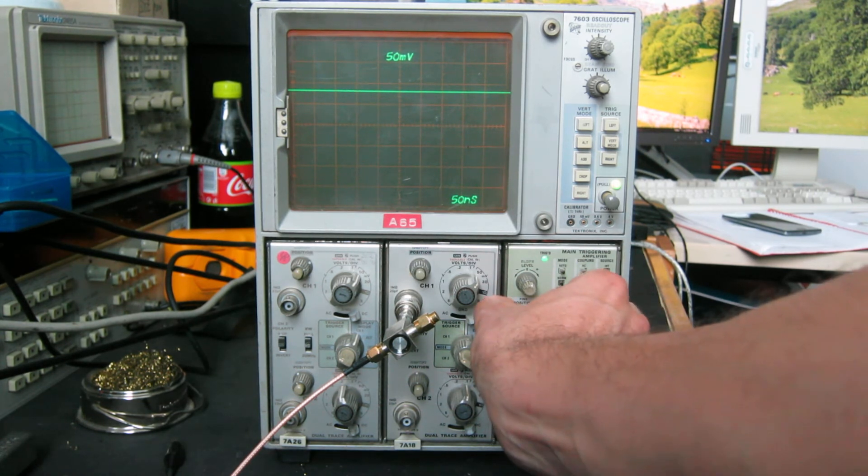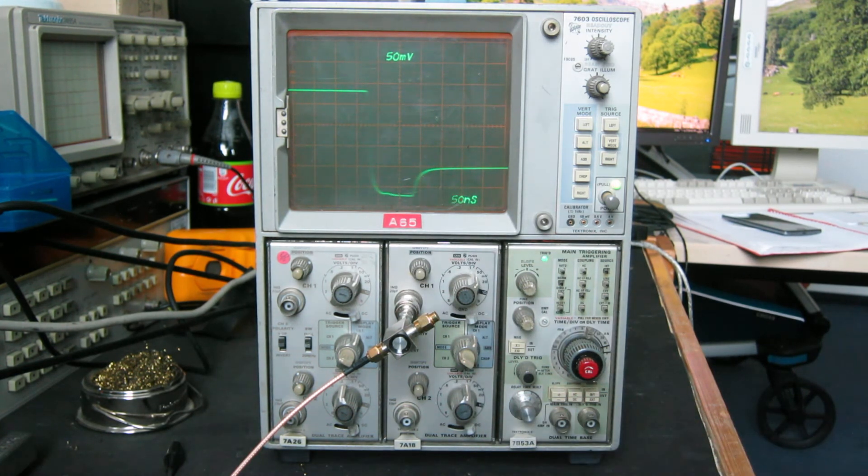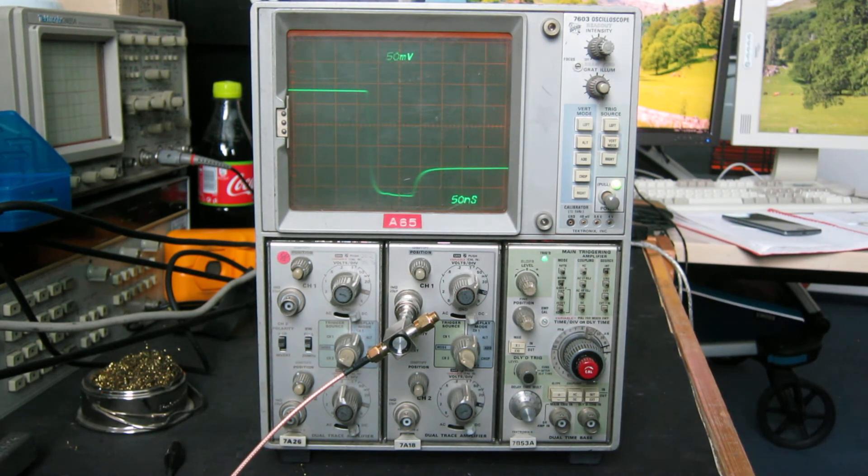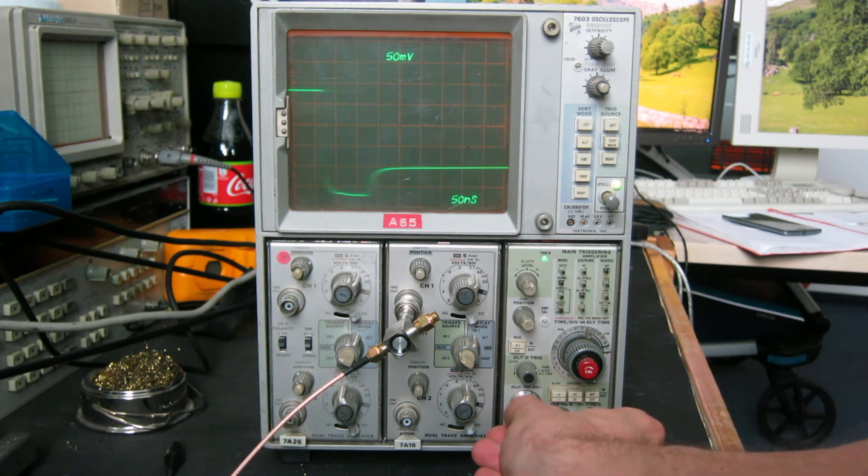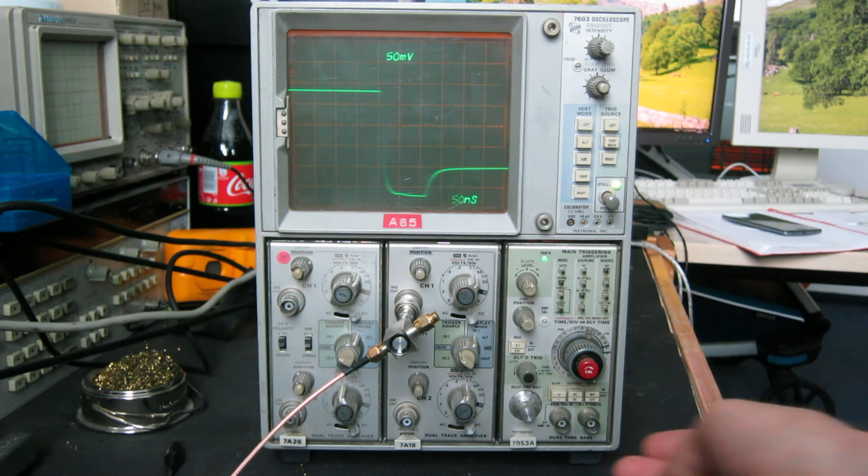And now we can move the delay so that we can actually see that portion of the waveform. So the delayed time base on the scope allows you to examine waveforms. In fact, you can zoom in in the analog domain and wander your way along and look at the edges. There we go, there's another edge. And back to the first one. So that's the delayed time base working.